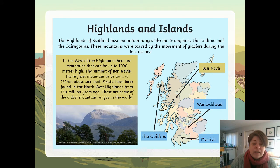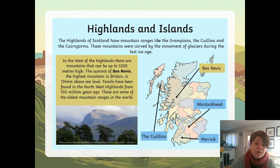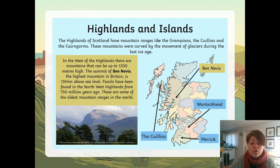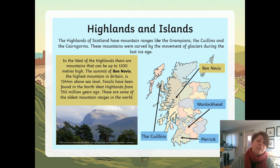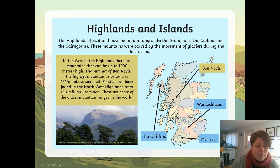The Highlands of Scotland have mountain ranges like the Grampians, the Cuillins and the Cairngorms. These mountains were carved by the movement of glaciers during the last ice age — think of really massive ice cubes cutting through the land, that's what the glaciers were. In the west of the Highlands there are mountains that can be up to 1,200 metres high.